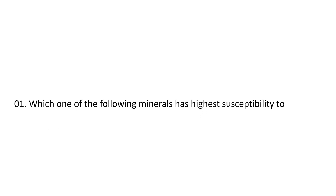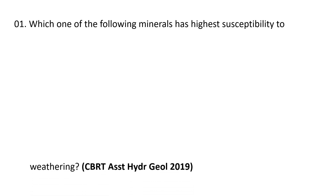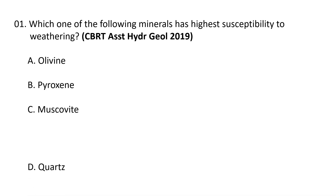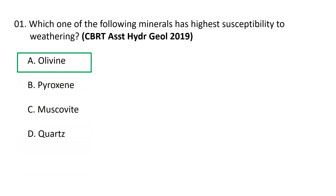Coming to the first question: which one of the following minerals has the highest susceptibility to weathering? Choices are: a) olivine, b) pyroxene, c) muscovite, d) quartz. Olivine has the highest susceptibility to weathering because it has more iron content and is more susceptible to oxidation. Mafic minerals like olivine, solidified at very high temperatures, decompose more rapidly through chemical weathering. So olivine is the correct answer.